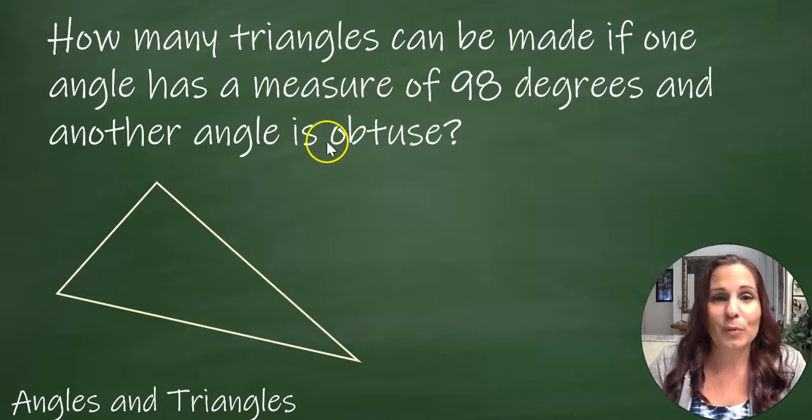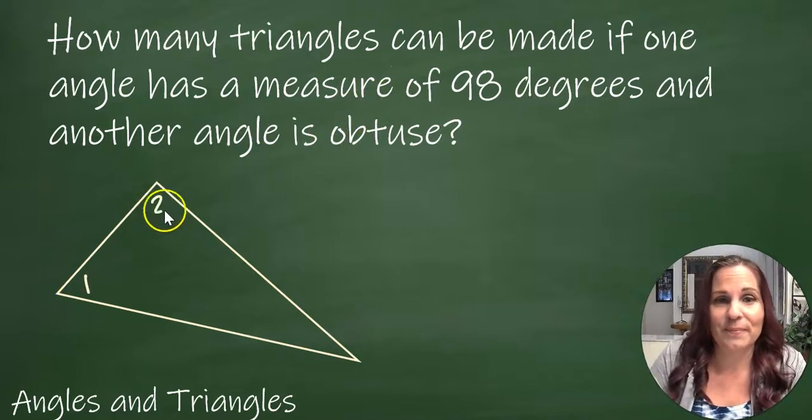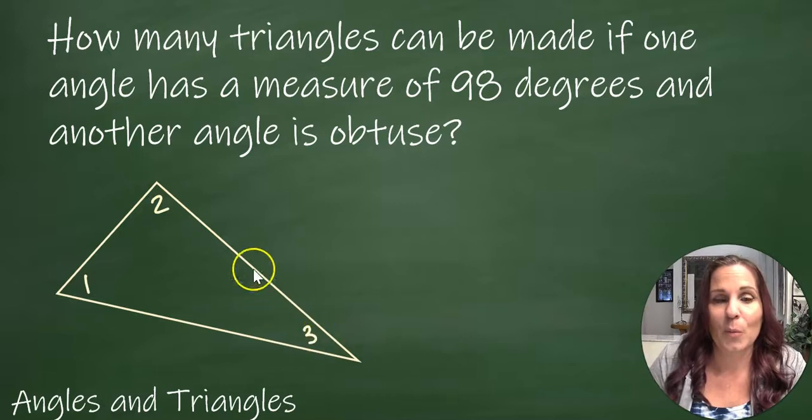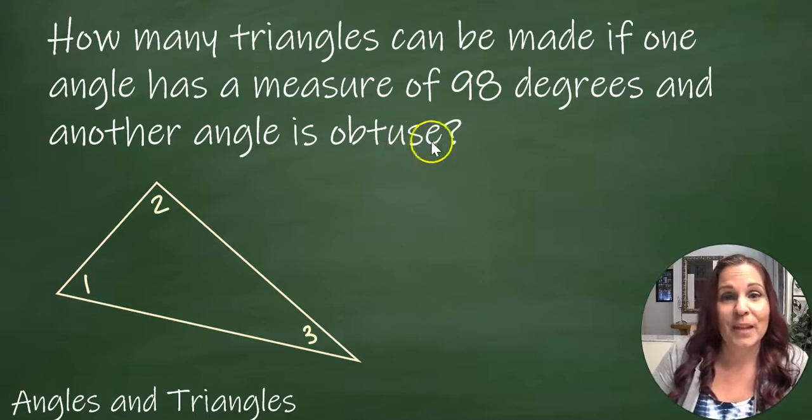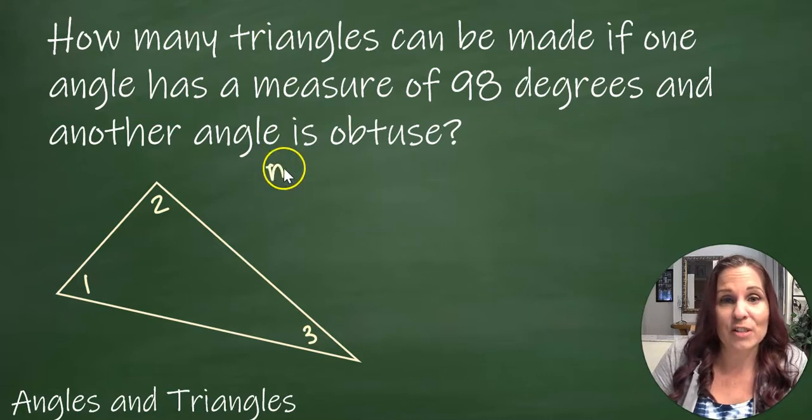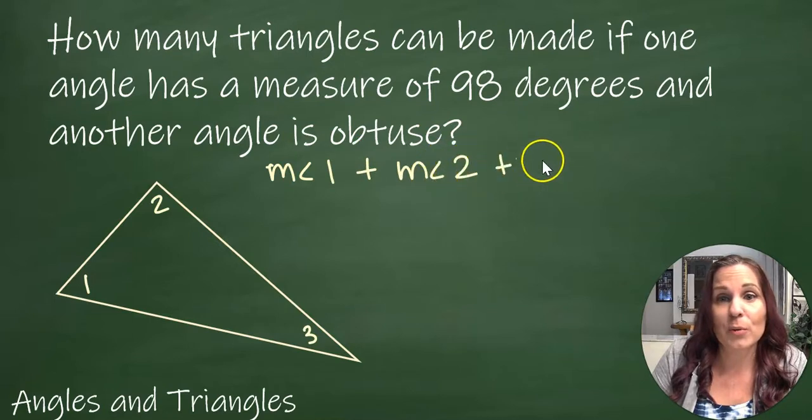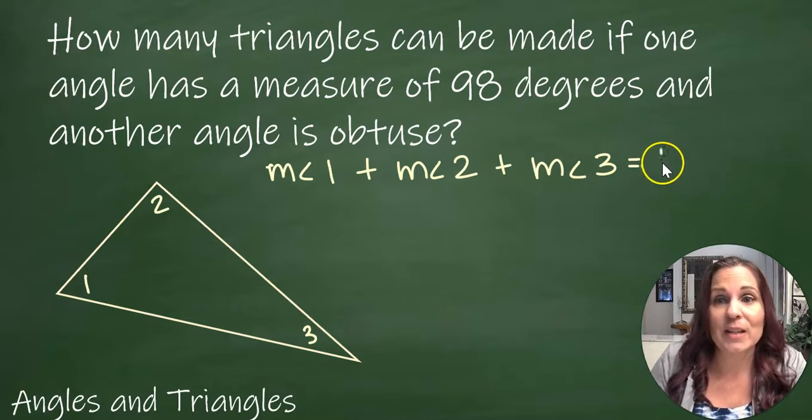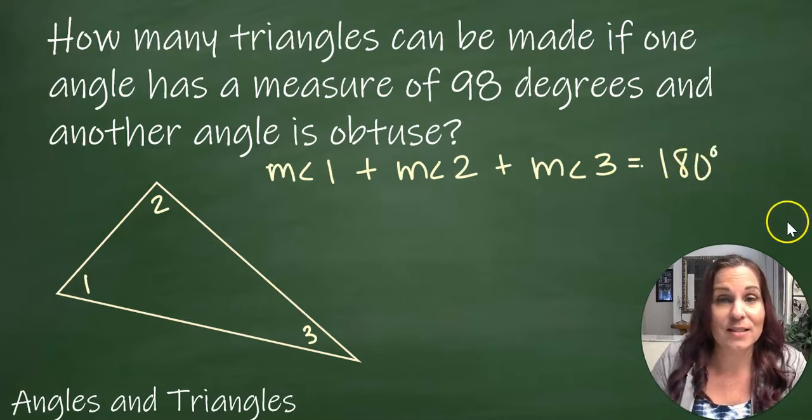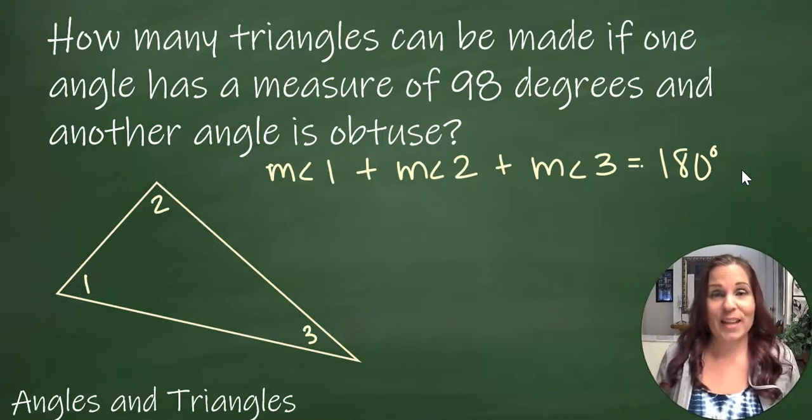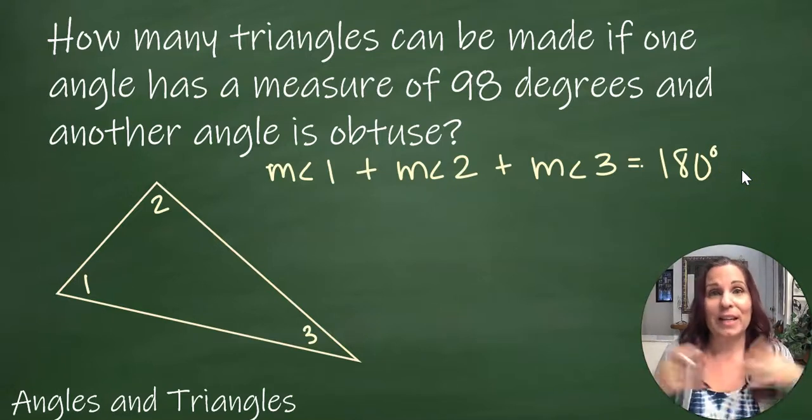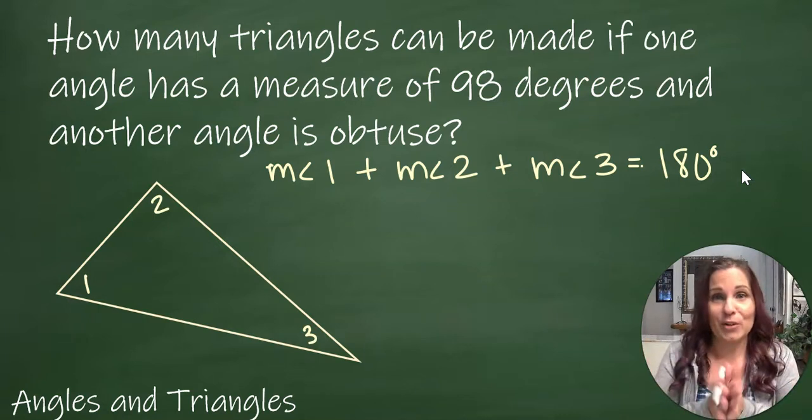So the three angles of a triangle will always have the same sum no matter the shape or size of the triangle. When you add these angle measures together, so measure of angle 1 plus the measure of angle 2 plus the measure of angle 3, the sum will always be 180 degrees. It will never be any less, it will never be any larger, it will always be 180 degrees.